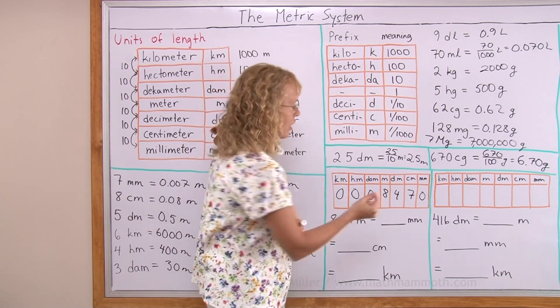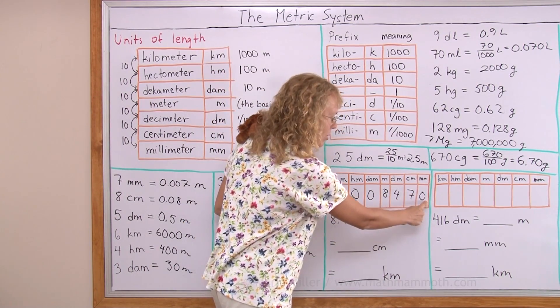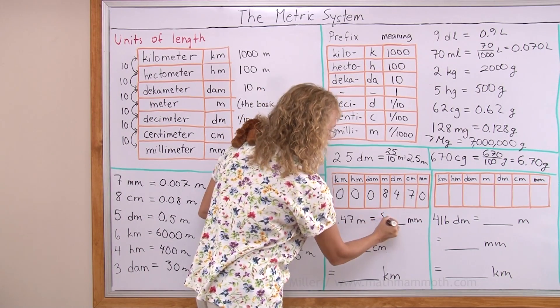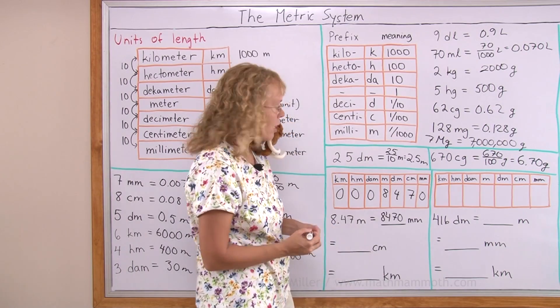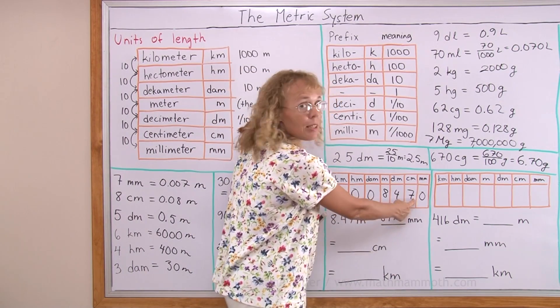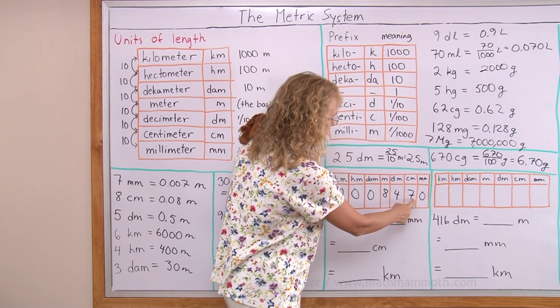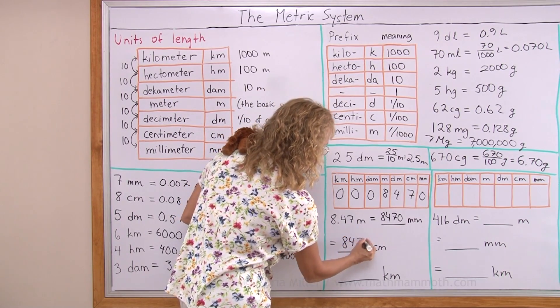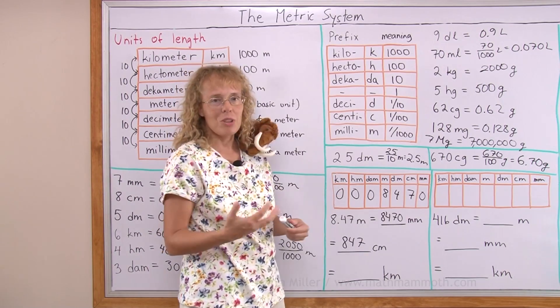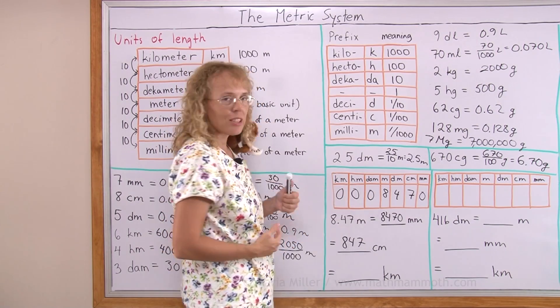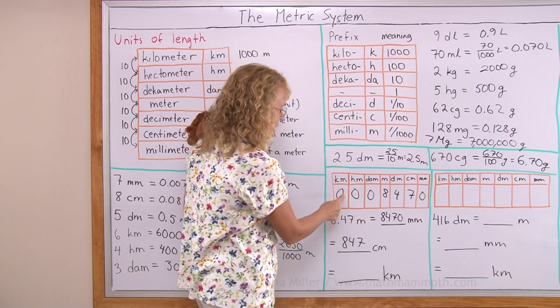So basically, reading it in millimeters, I move my decimal point to the right after millimeters. Reading it in centimeters, I move my decimal point here right after centimeters. And so I get 847 centimeters. And then reading it in kilometers, which usually you wouldn't do such a thing, but this table allows us to do it really easily. I put my decimal point here.